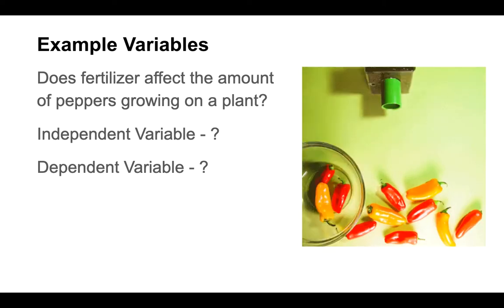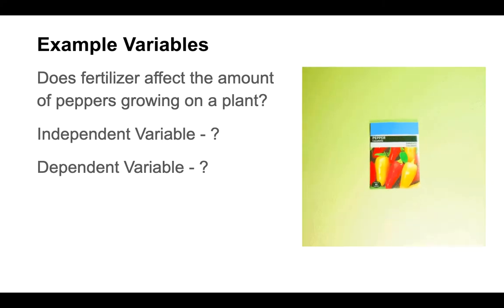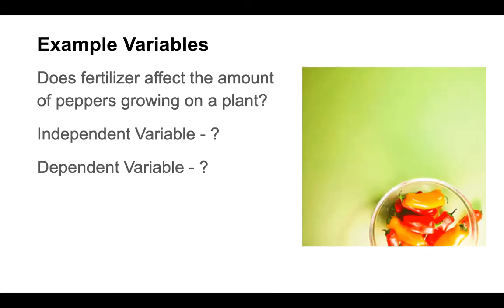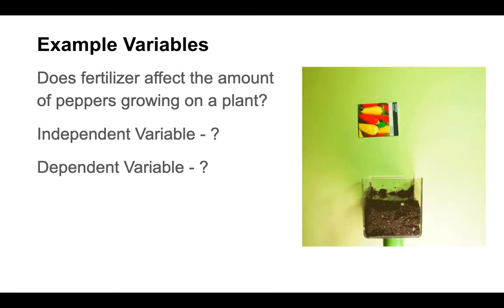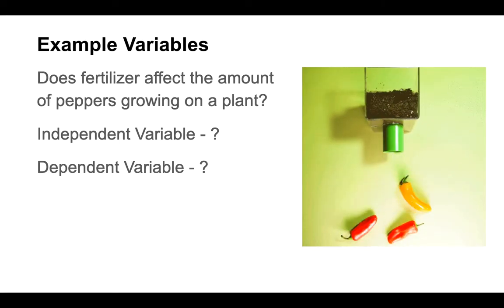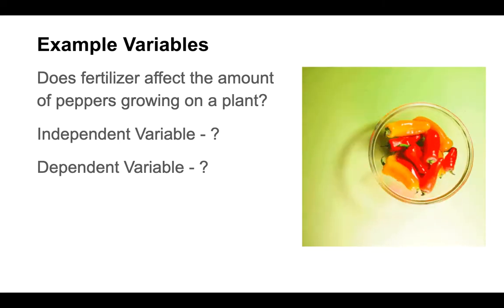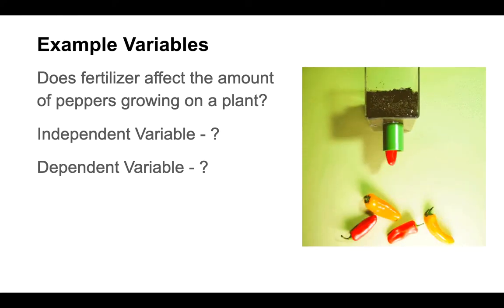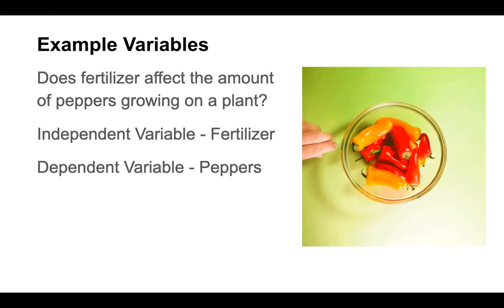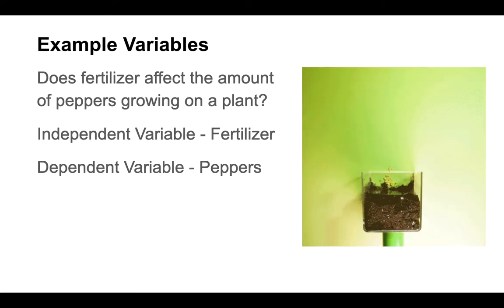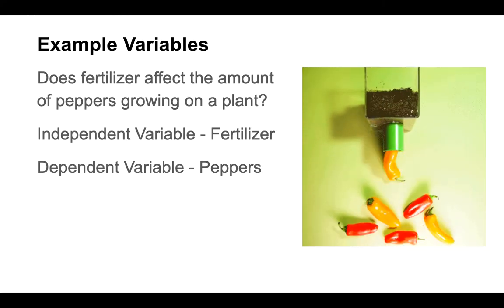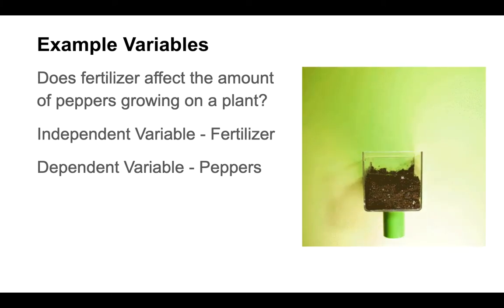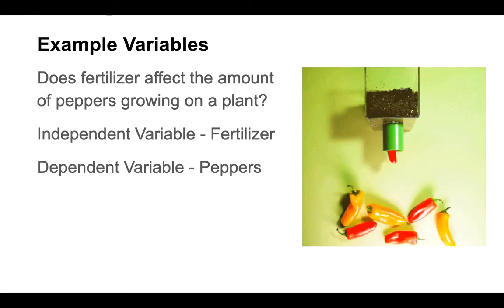When I think about this, the independent variable is the one that we are actively changing — another way to look at it is that I'm in charge of the independent variable. So am I in charge of changing the amount of fertilizer that goes to the plant, or am I in charge of changing the amount of peppers that are growing? When I think about it that way, it's the fertilizer that I can change, so the fertilizer is the independent variable. The other thing that changes because of the fertilizer is the amount of peppers — that will be our dependent variable.